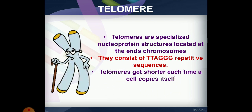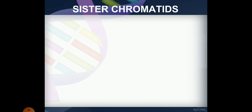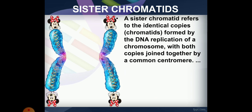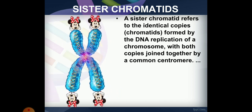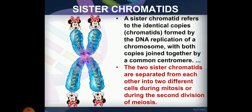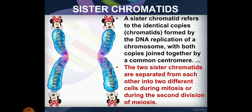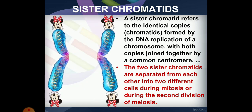Telomere shortening is associated with aging. Sister chromatids refers to identical copies formed by DNA replication of a chromosome. Both copies are joined together by a common centromere. Two sister chromatids are separated from each other into two different cells during mitosis or during the second division of meiosis.